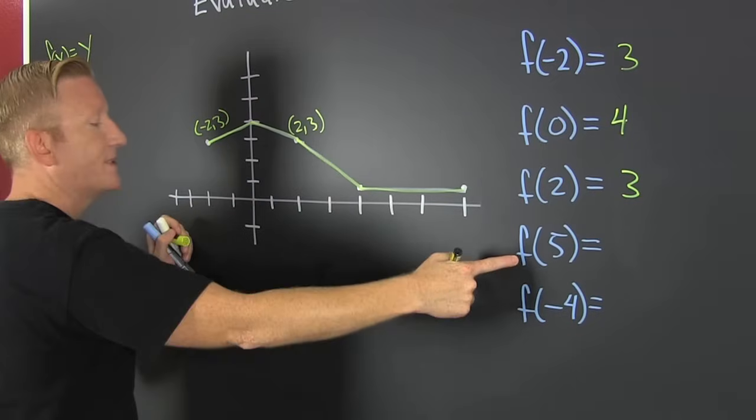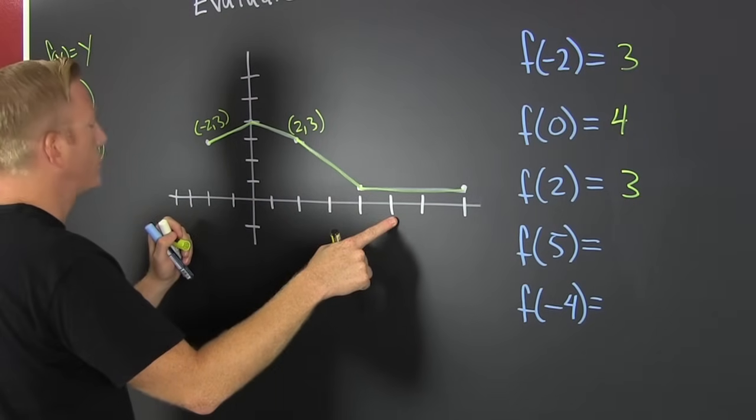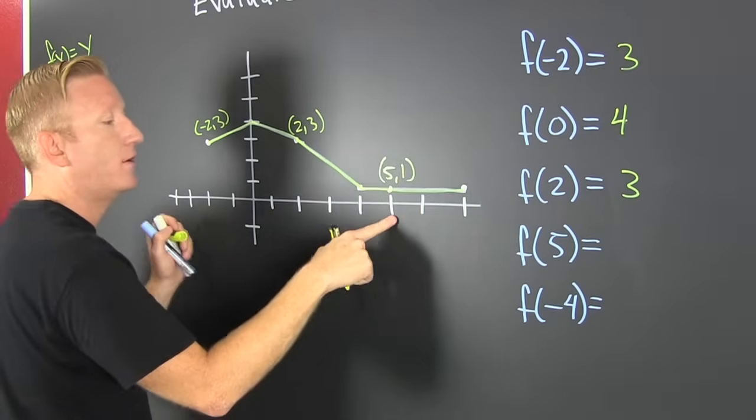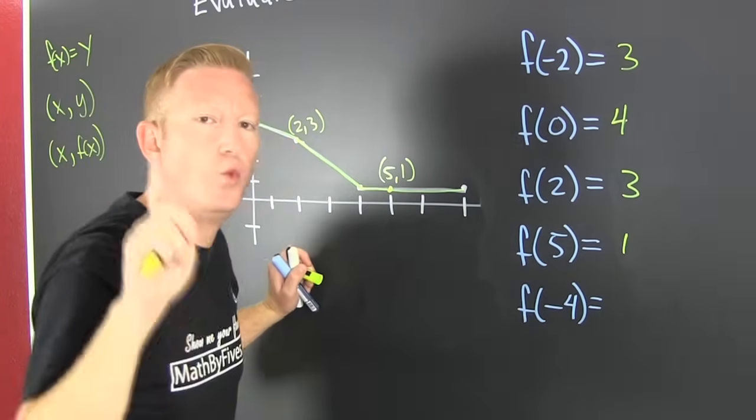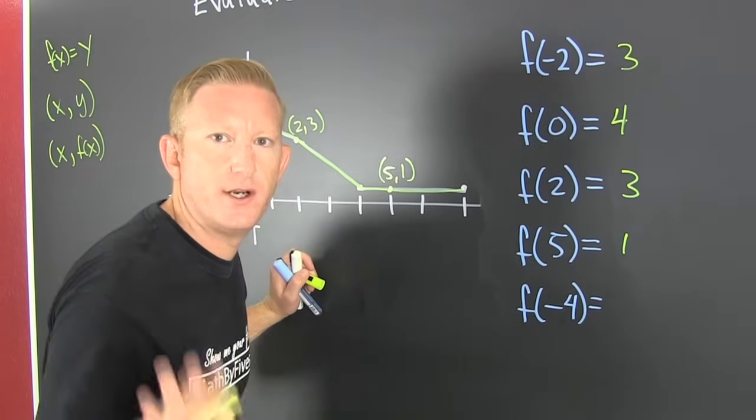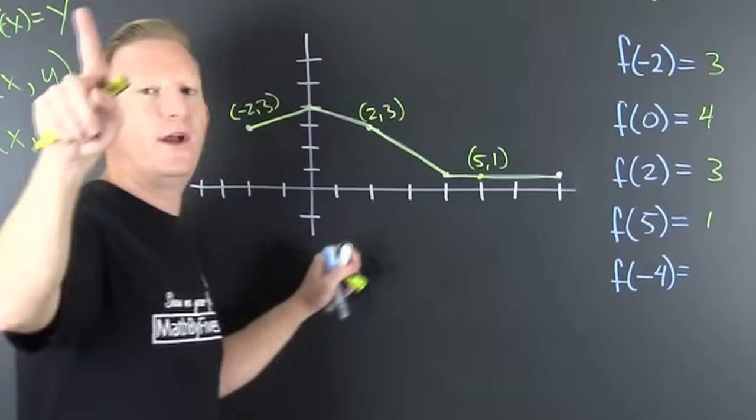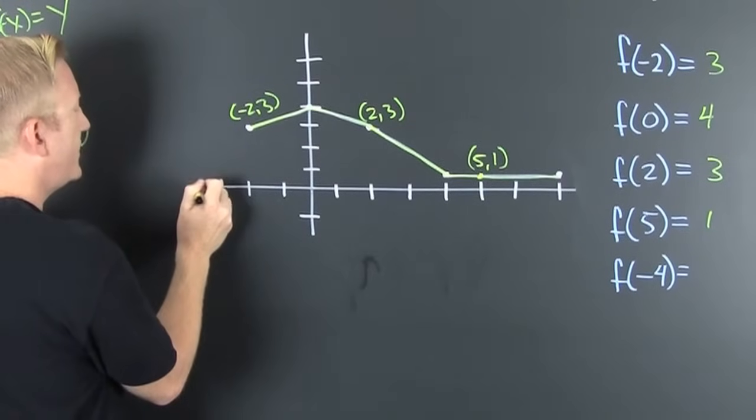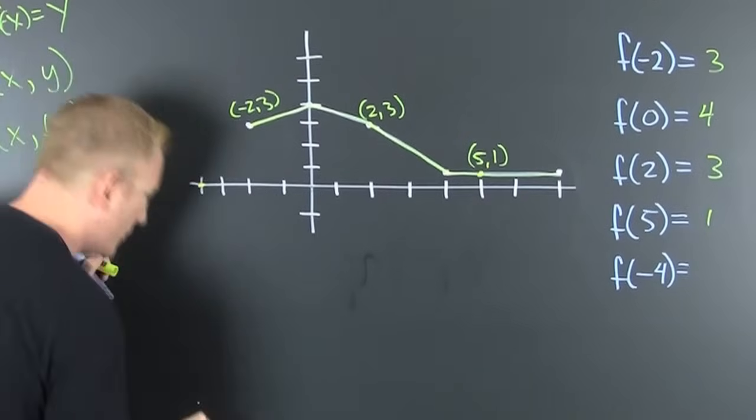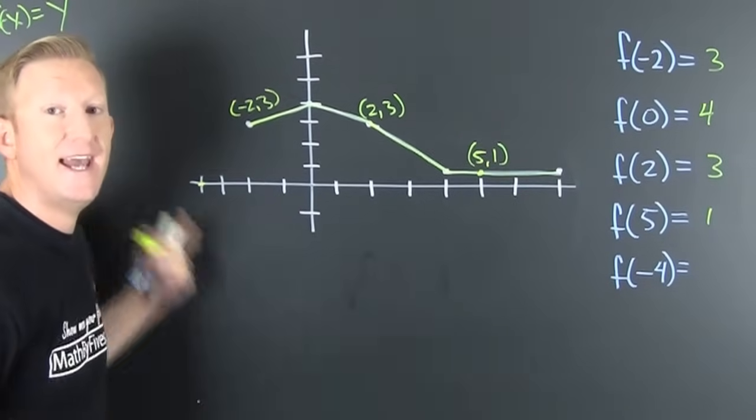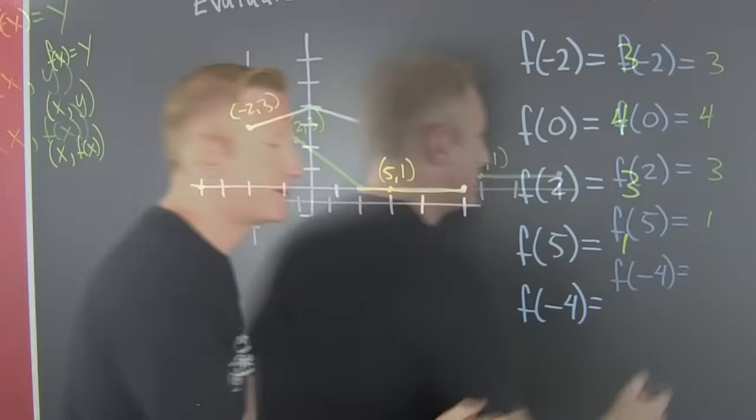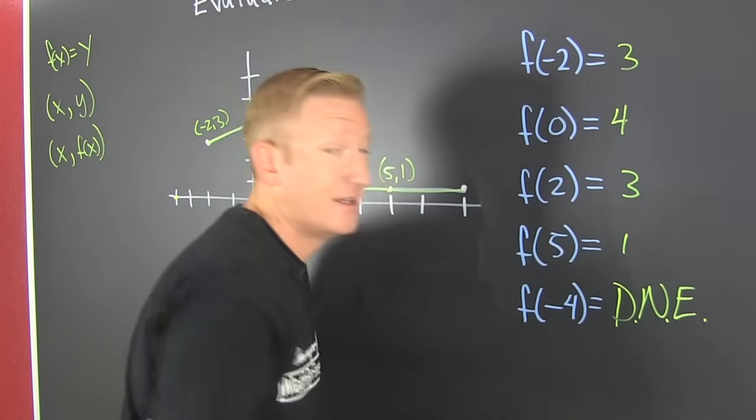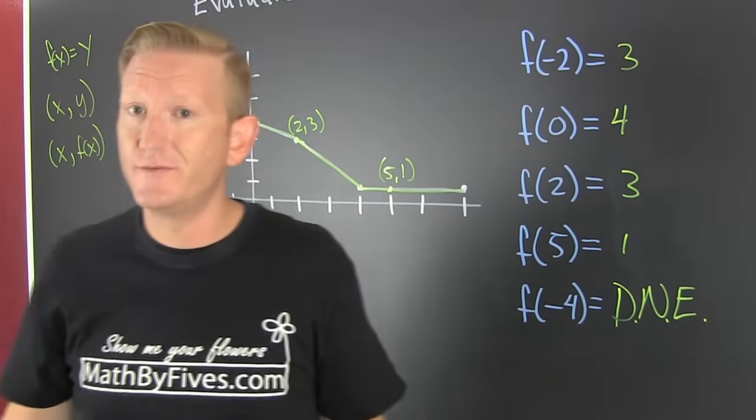More. 5. x is 5, that's right there. What's y? Y is 1. That's 5 comma 1. So that's 1. One more, f of minus 4. I want to explore what happens when we go over here to minus 4. You look high and you look low and you don't find anything. This does not exist. That's pretty much how you evaluate a function from a graph.